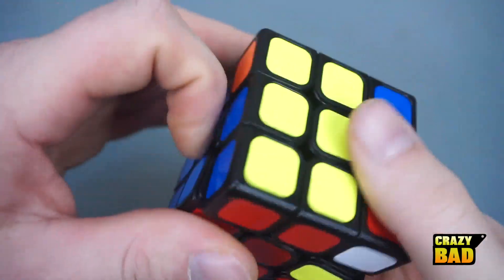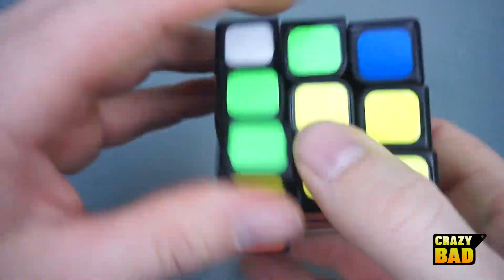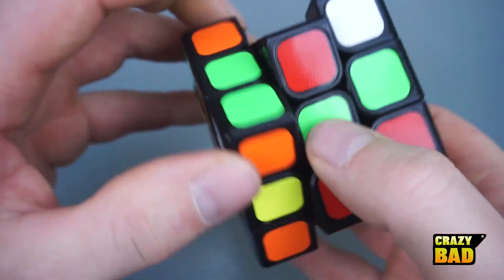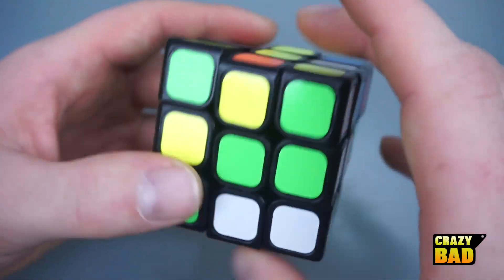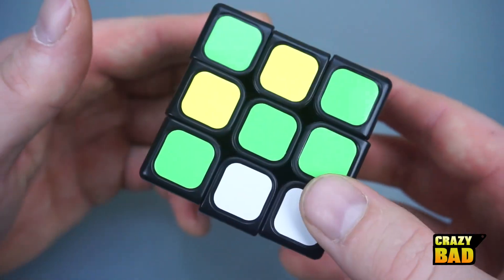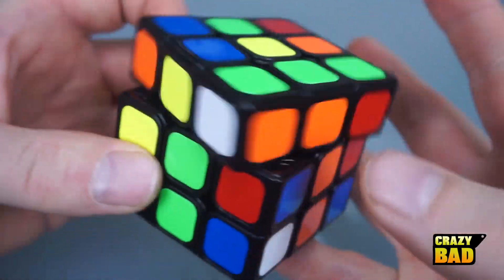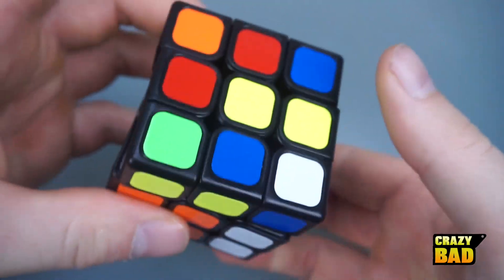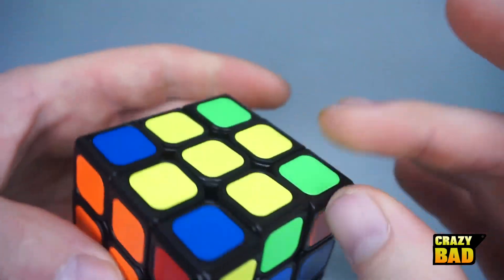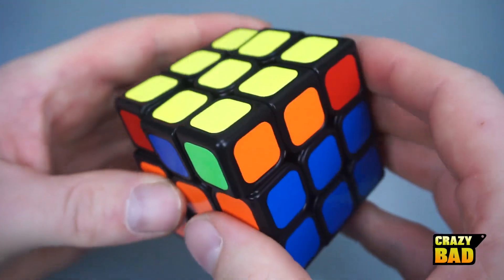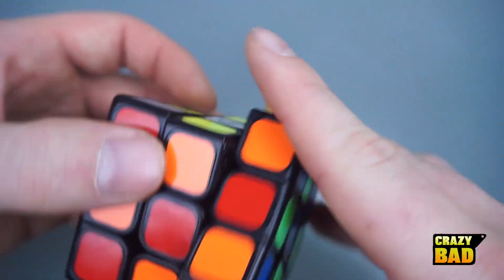Yeah, so let's do another one. All right. Same G perm again. Anyways, let's do a checkerboard pattern so you can see the color scheme.